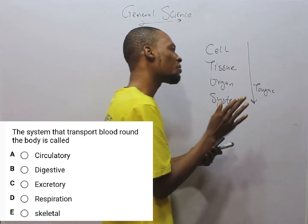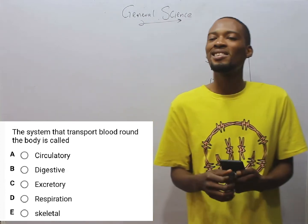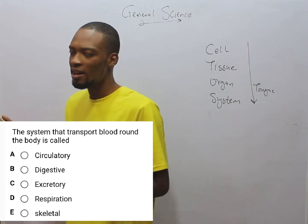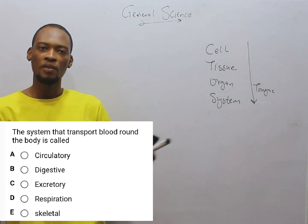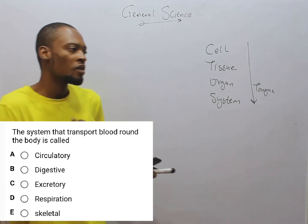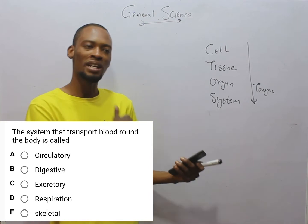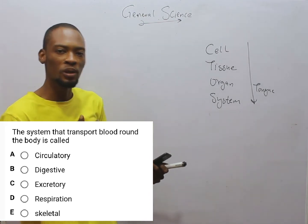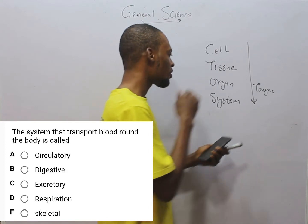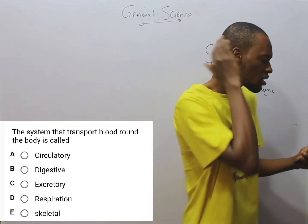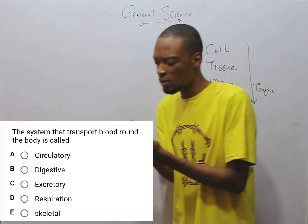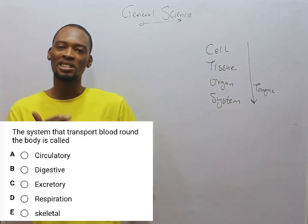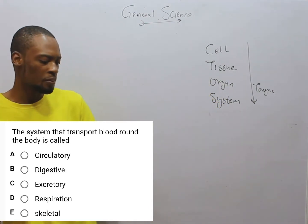The circulatory system is the system in the body that helps to circulate blood and nutrients around the body — from the heart to the body and from the body back to the heart. You can see the circulation of blood and nutrients, which means the system that transports blood around the body is referred to as the circulatory system.